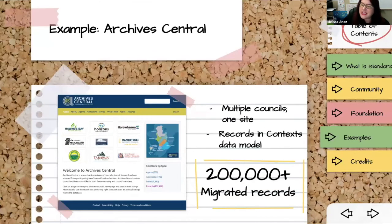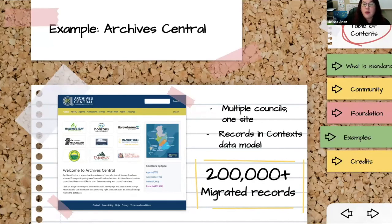Archives Central is the most recent Islandora site launch, also out of New Zealand. It's a multi-site serving multiple New Zealand councils from a single instance, differentiated with branding and theming on individual council pages. They've migrated over 200,000 records out of a legacy system called Kete and modeled everything in the Records in Context data model — making it, according to the developers, one of the first fully functional Records in Context implementations in production.